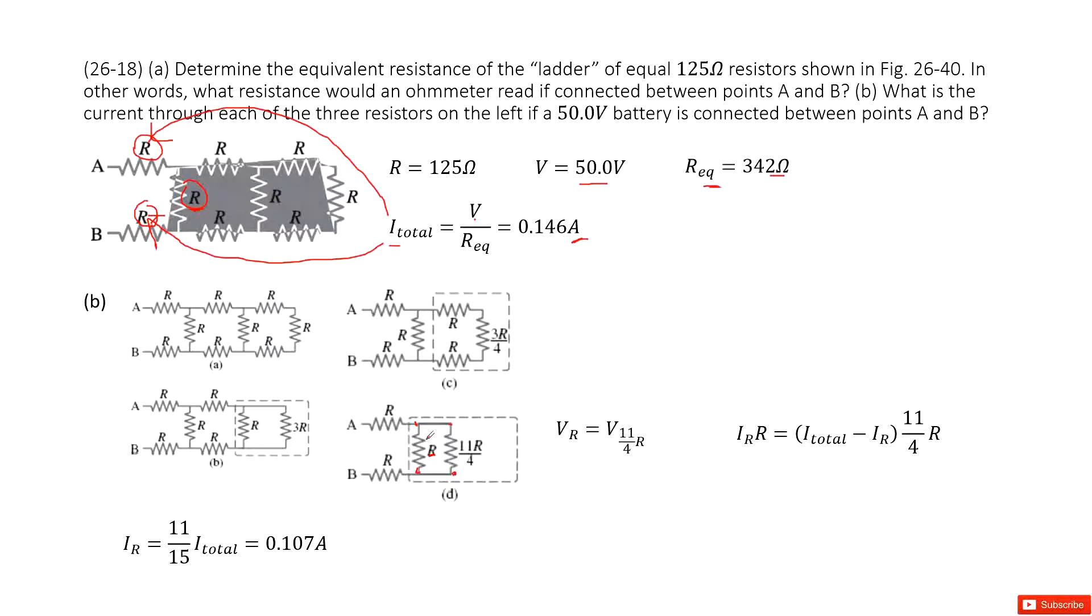And then the voltage for this R should be the current I_R times R. And the voltage for this point to this point should be I_total minus I_R times the resistance 11R over 4. Now we can solve this equation. We can get the function for I_R. Input I_total, you get the answer there. Thank you.